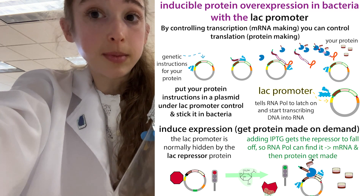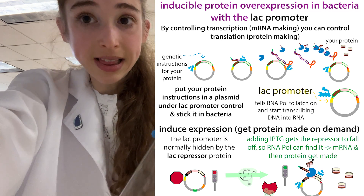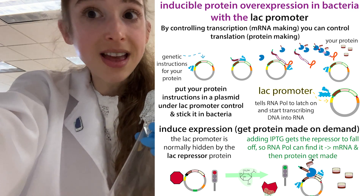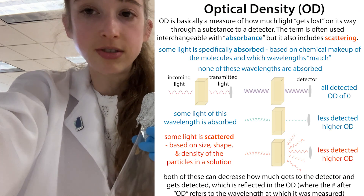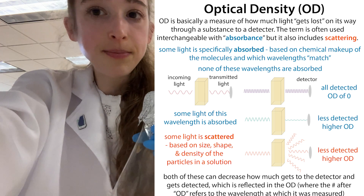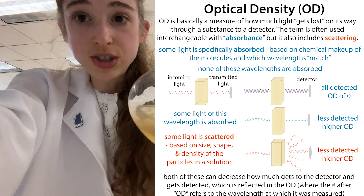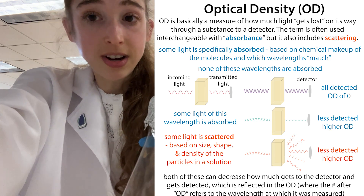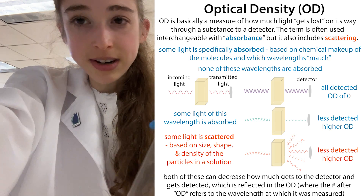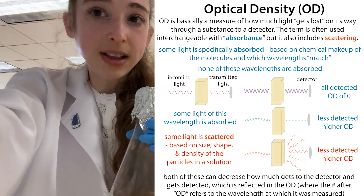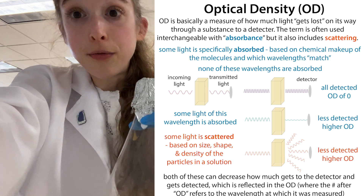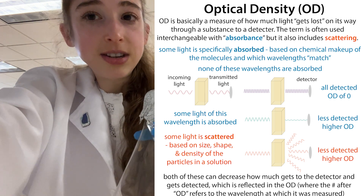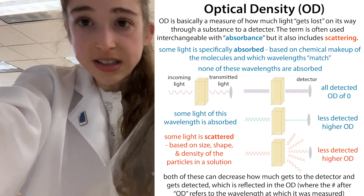We don't just have them make the protein from the beginning, because we want them to devote their energy to duplicating - making lots of copies of themselves. Then, when there are lots of copies, we induce expression. We monitor the growth of the bacteria by measuring the optical density or OD. Basically, the more bacteria there are in the solution, the less light can go through. We find when they're in that phase where they're doubling and doubling - before they run out of nutrients, plateau, and start dying. We find that sweet spot, that mid-exponential range, and then we add the IPTG to convert them into protein-making factories.